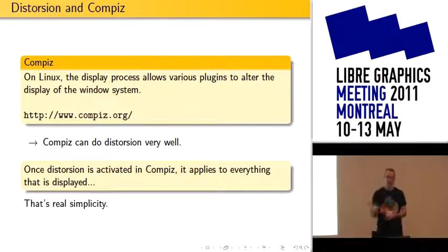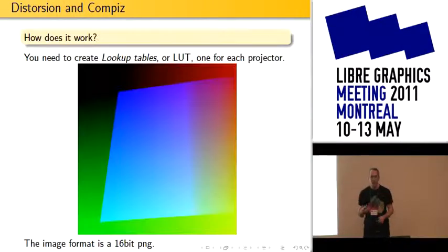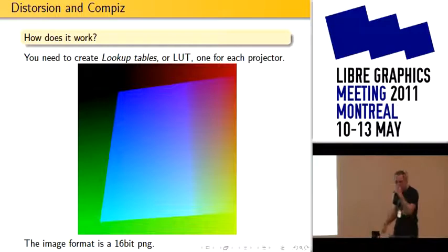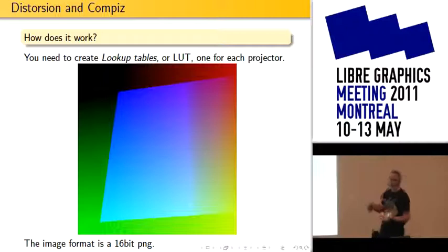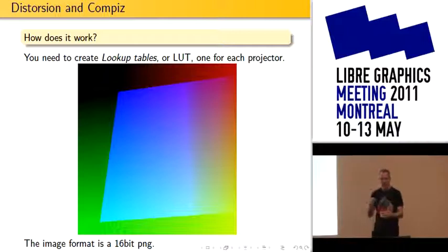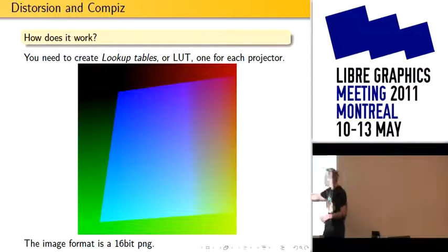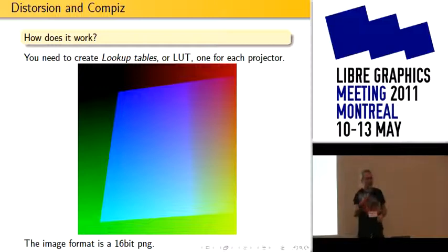Once you have the plugin, it becomes extremely simple to use. You use this distortion plugin that you just enable, and then you need to create a lookup table that will take pixels from the screen and figure where they should come from on the desktop, and do the selection of the pixels. It comes in the form of an RGB image — it's a 16-bit PNG, which is nice to look at too.